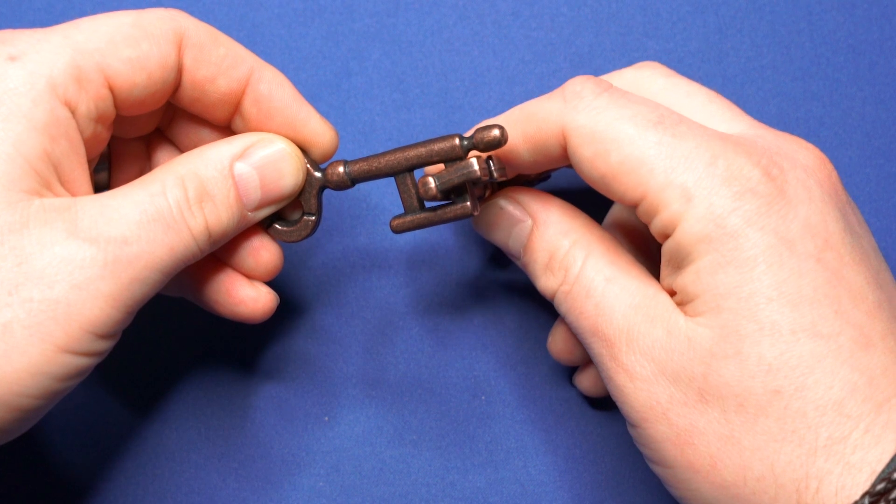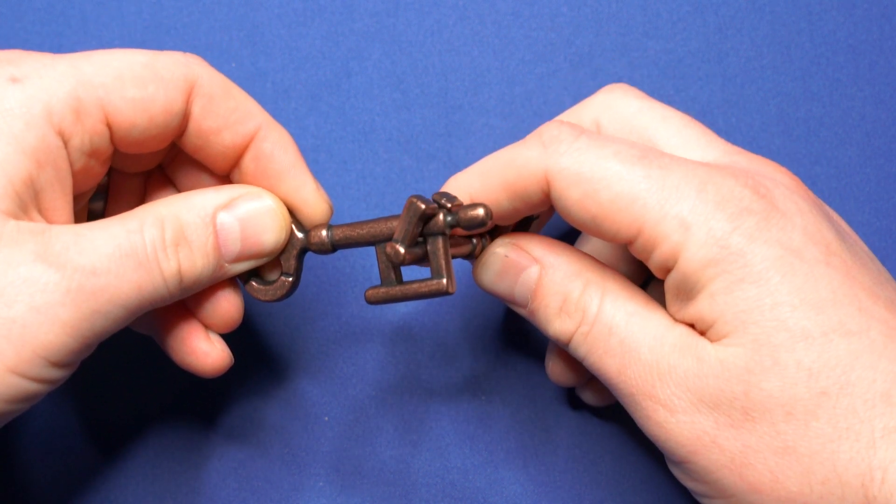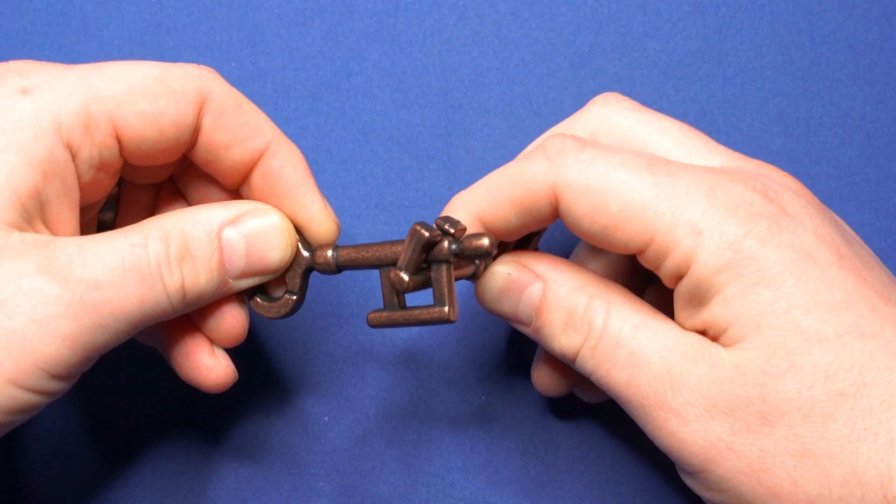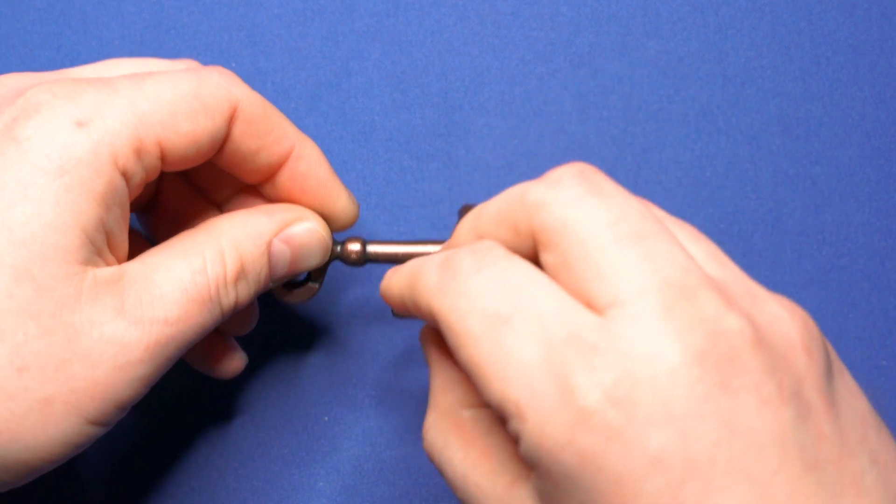Then you turn like that, which will allow you to go through this gap right there. That's the first main thing. Because then you can bring it around here.